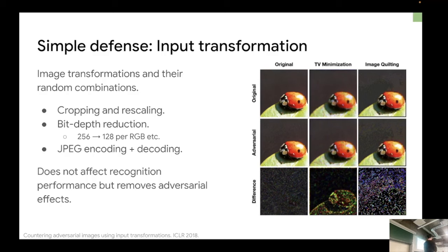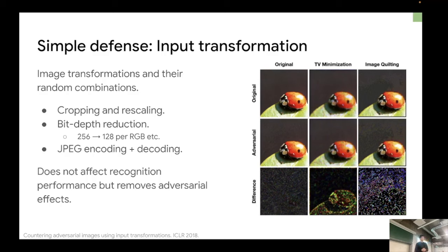This cropping technique is used to maximize the performance of image recognition. For each patch, you take the crop, rescale it to the network's input size, and then pass it through the network to get the output. In that process there's a cropping and resizing operation, and the claim is that these operations are sufficient to actually remove adversarial effects. So it's a very simple defense — you don't have to do anything special; you just apply the typical pipeline and the adversarial effect is gone.